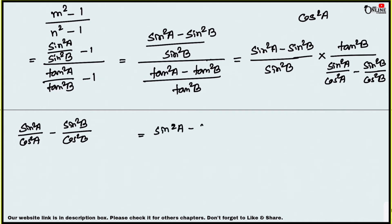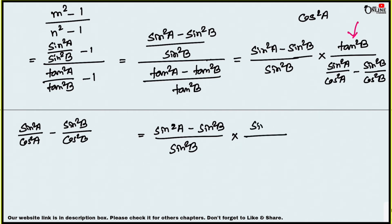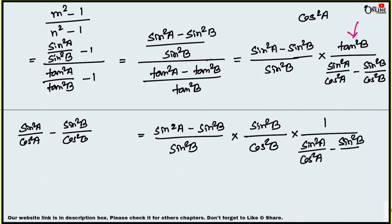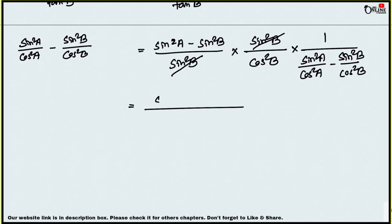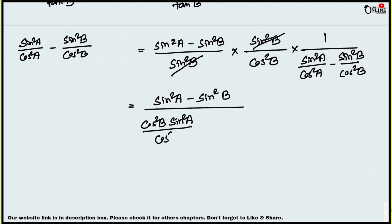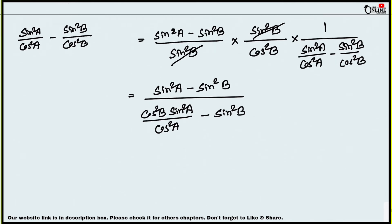Substituting tan²b = sin²b/cos²b: the expression becomes (sin²a - sin²b)/sin²b × (sin²b/cos²b) / (sin²a/cos²a - sin²b/cos²b). The sin²b terms cancel. The denominator expands to (cos²b sin²a - cos²a sin²b)/(cos²a cos²b), giving cos²b sin²a in the numerator area after simplification.